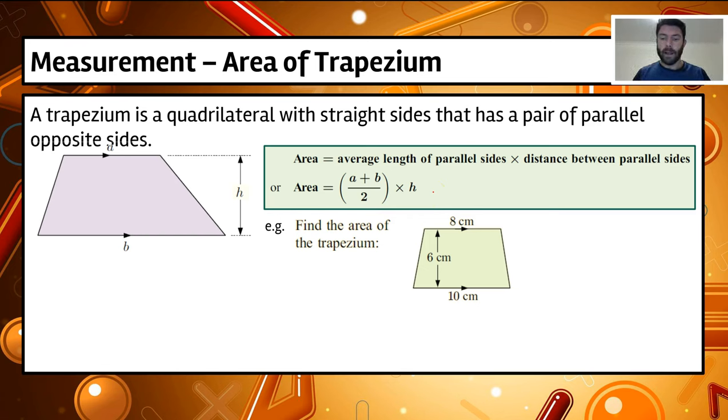So if we have a look at our example here, find the area of this trapezium, you can see that we've got, it's a trapezium, that we've got two parallel sides and the other two sides aren't. We've got 10 centimeters at the bottom, 8 centimeters at the top and our vertical height is 6.